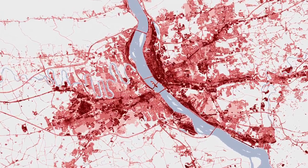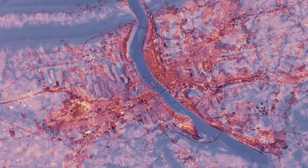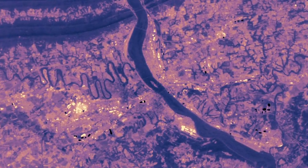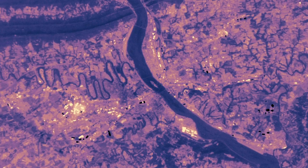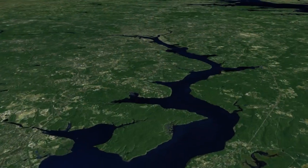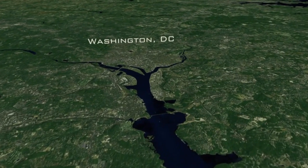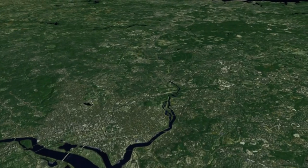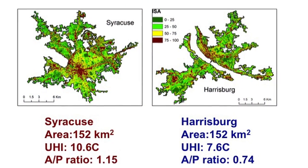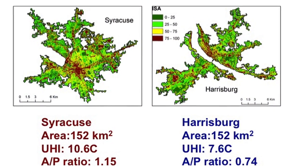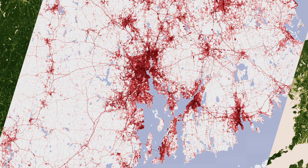We find that the urban heat island is affected by several factors. The first factor is the surrounding ecological context, and then the size of the city — meaning both the area of the city and also the population size. And then there is the shape of the city and also the development patterns of the city.